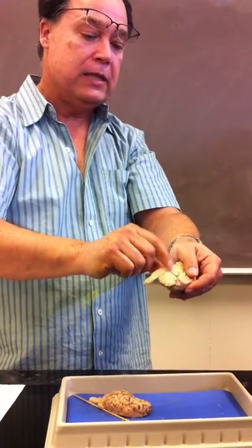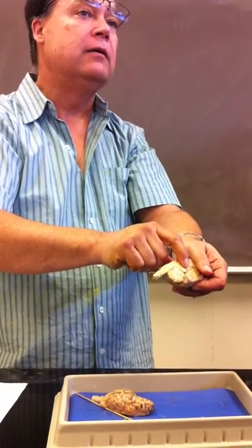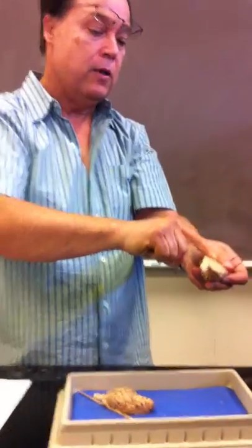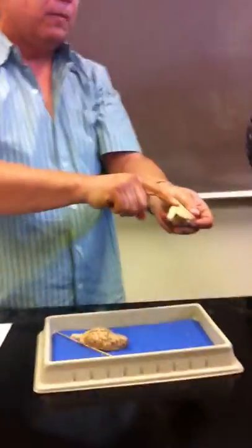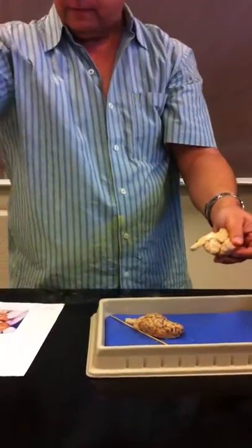And once you know where the pons is, this little area about right there, that's the midbrain. So: midbrain, pons, medulla oblongata, spinal cord.